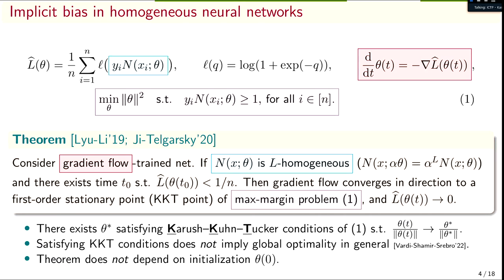The rest of the talk is going to discuss the consequences of the structure of neural networks that satisfy KKT conditions for margin maximization for this problem. If we can say anything about that, then we're illuminating the role of optimization — whether that's generalization or adversarial robustness. If we can show that just the KKT conditions for margin maximization imply something, then it really shows that the implicit bias of optimization is playing a key role in that phenomenon.